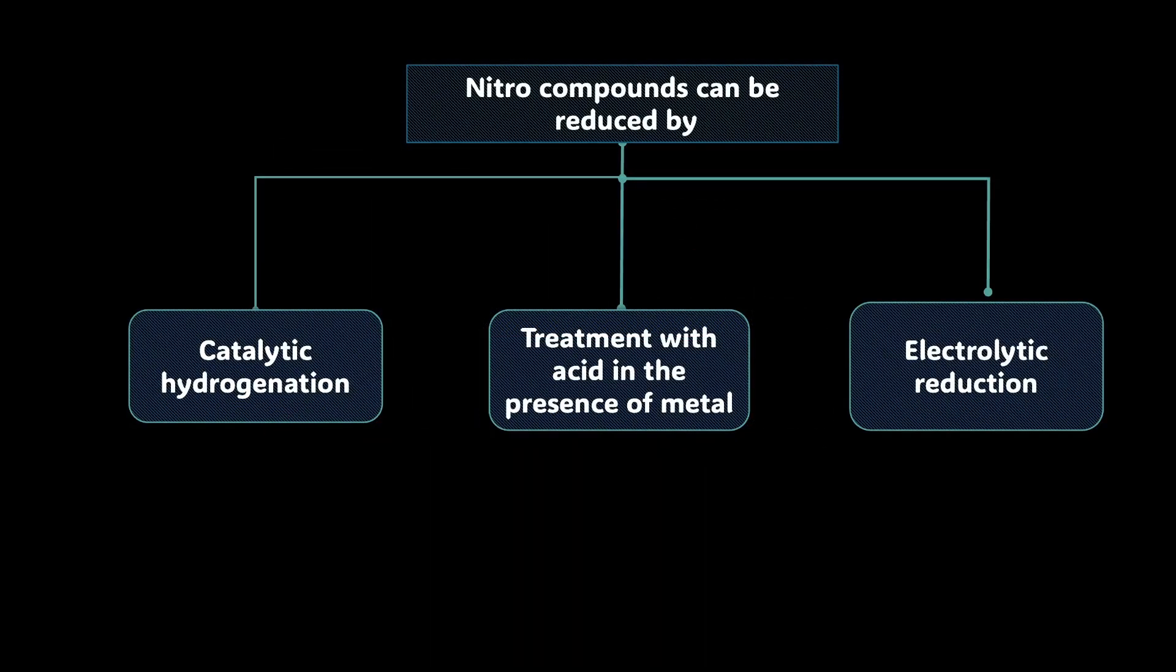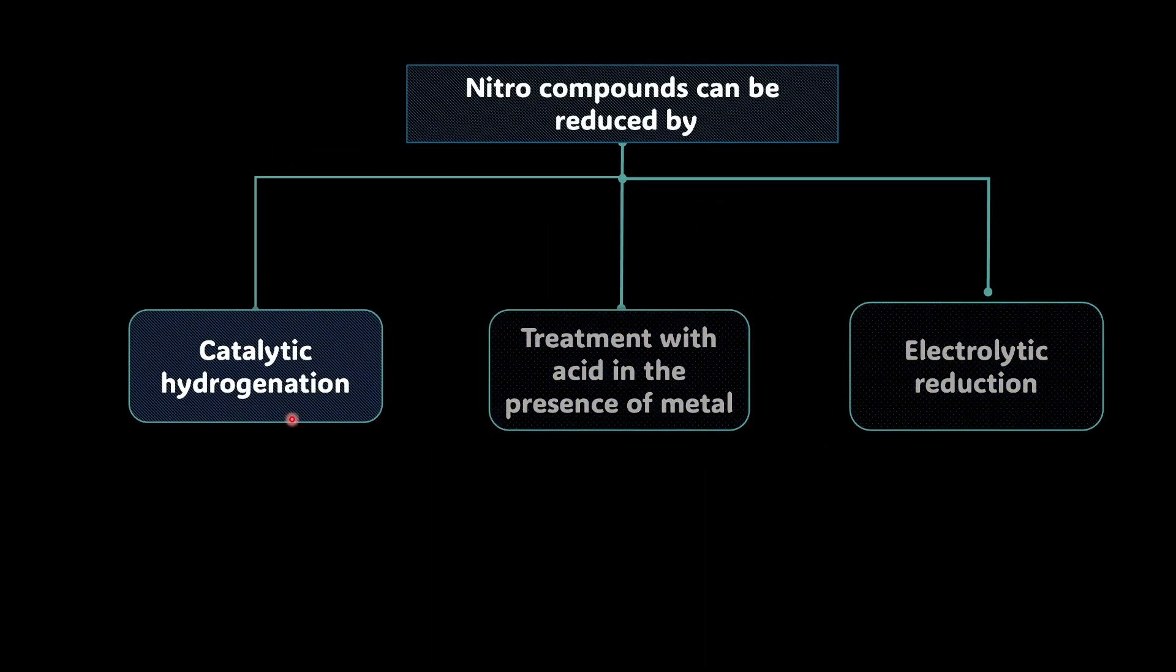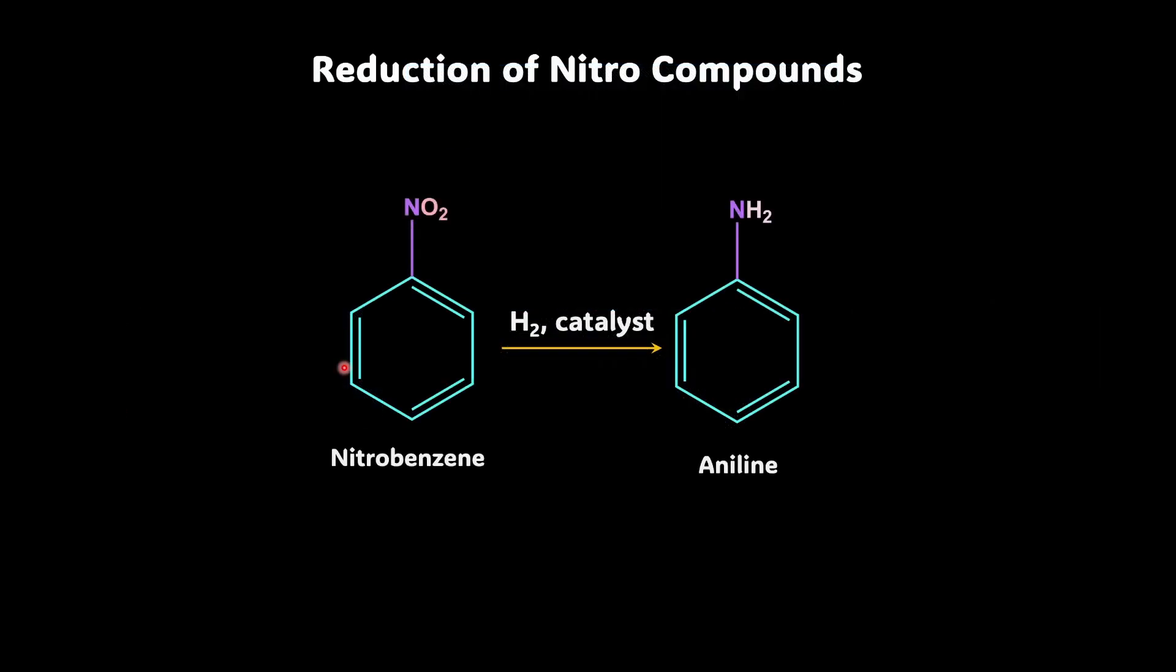Let's see the first one which is catalytic hydrogenation. So catalytic hydrogenation is not coming in front of you for the first time. You remember hydrocarbons? That is exactly the place where you learned for the first time catalytic hydrogenation, where an alkene was converted to alkane using hydrogen in the presence of platinum, palladium, nickel. You remember that? Yeah, we use the same. So here we can take nitrobenzene, we can add hydrogen in the presence of catalyst.